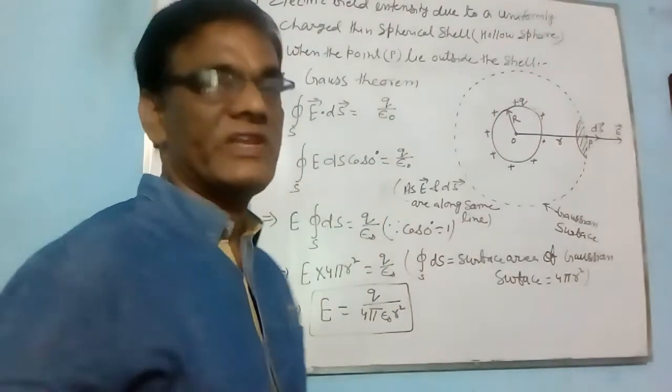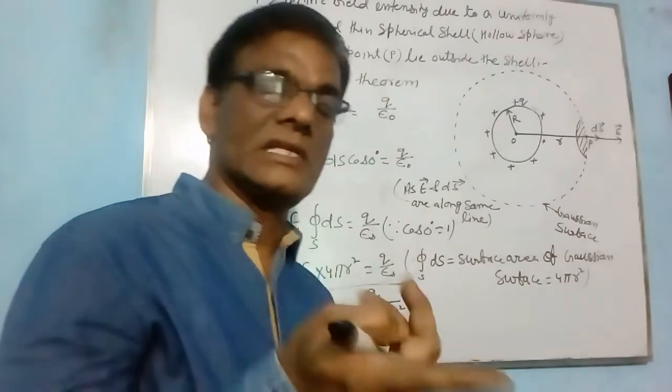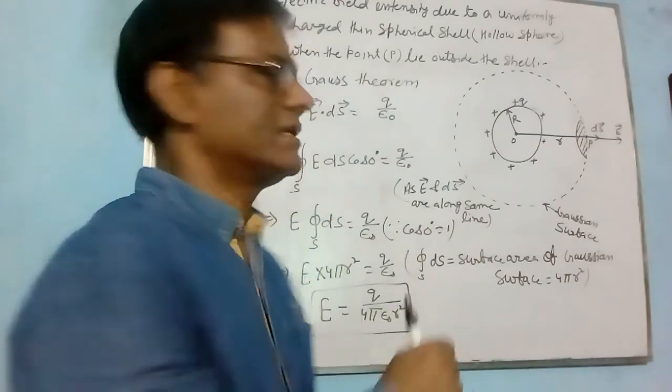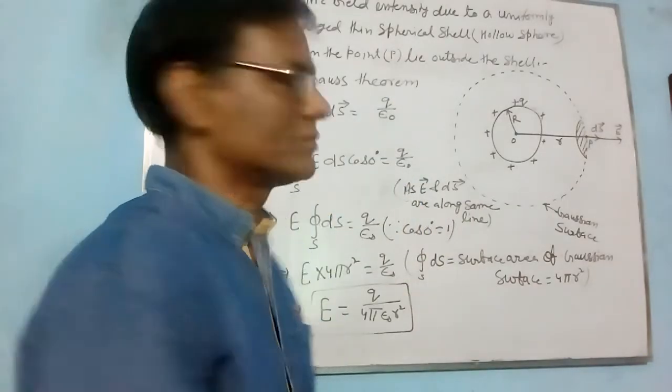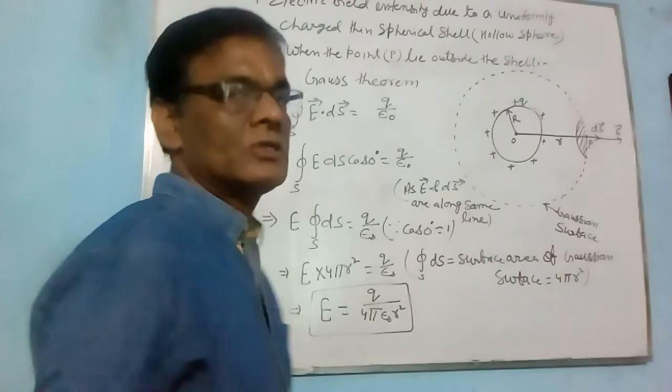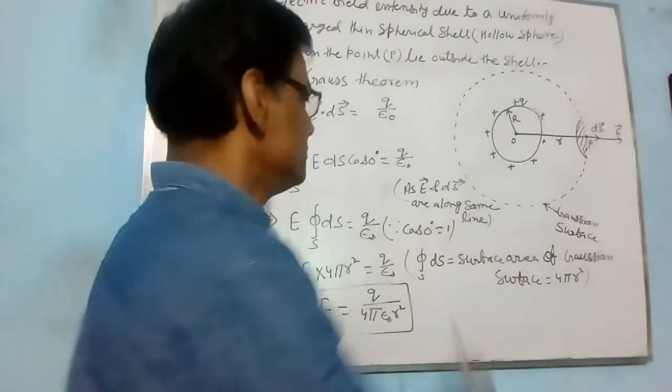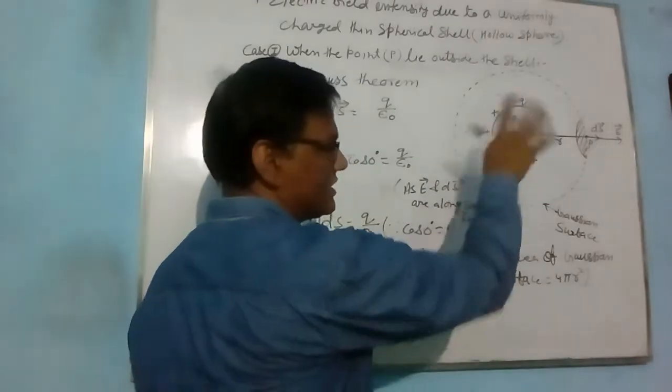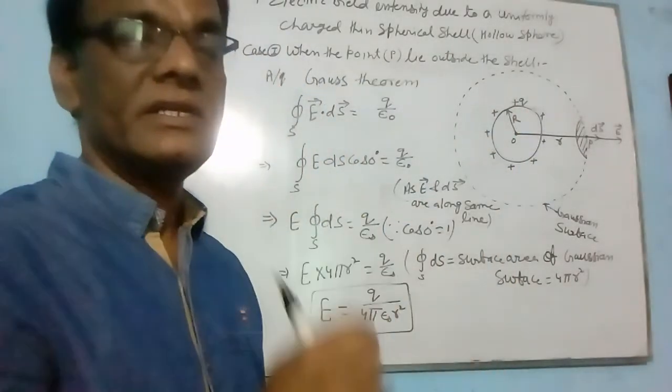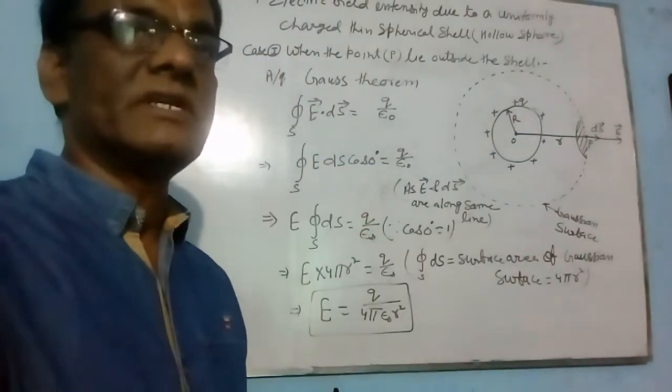According to Gauss law, total electric flux equals Q by epsilon naught. This becomes E·dS equals Q by epsilon naught because E and dS are along same direction. So theta becomes 0.